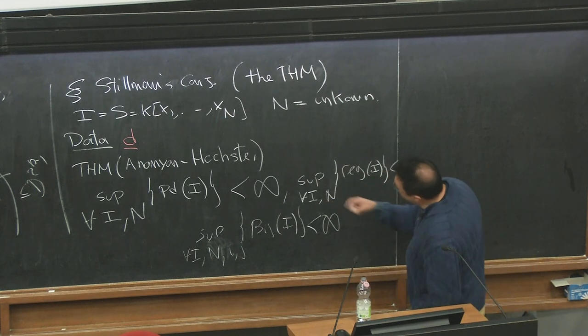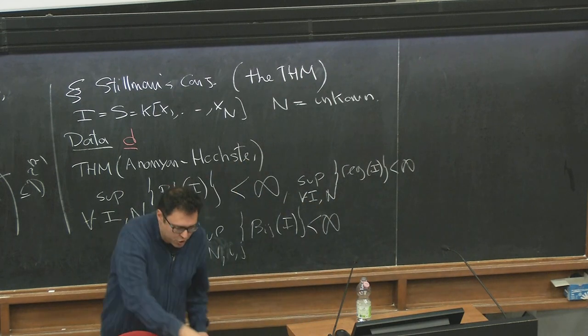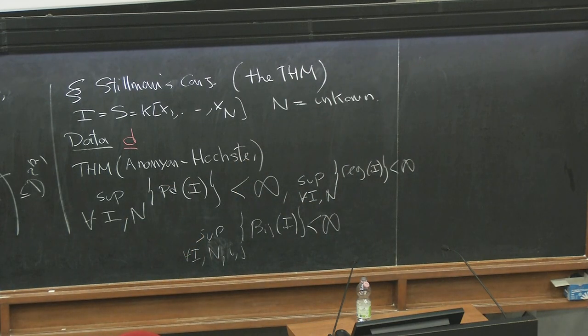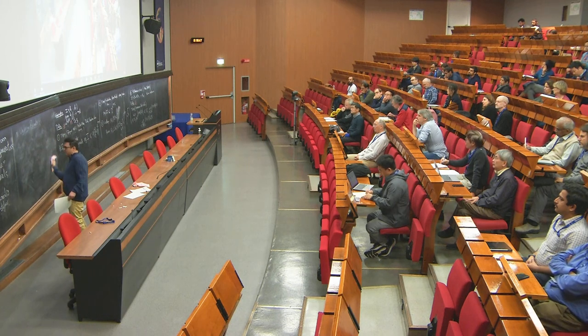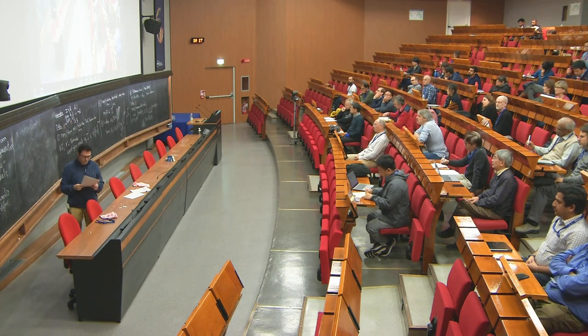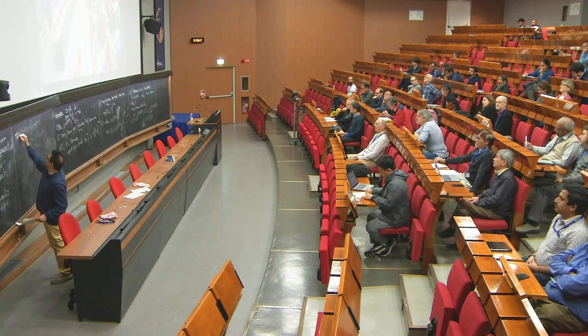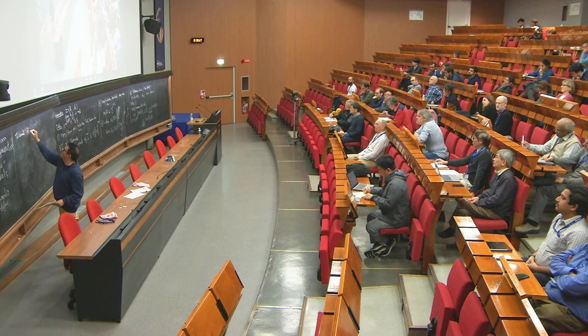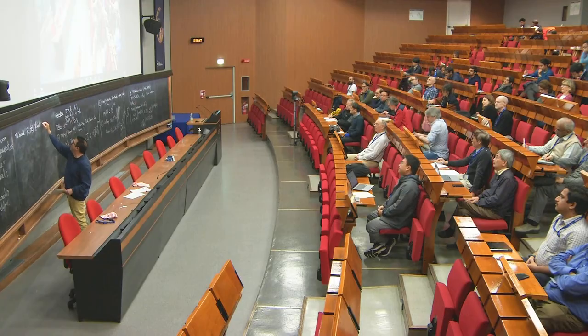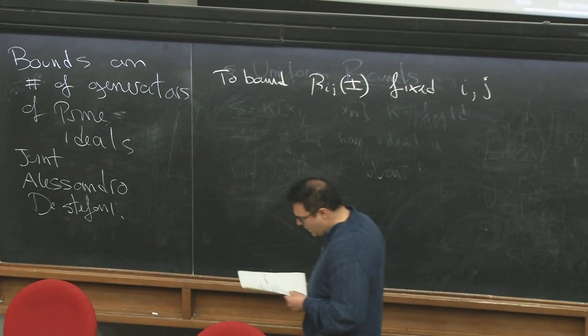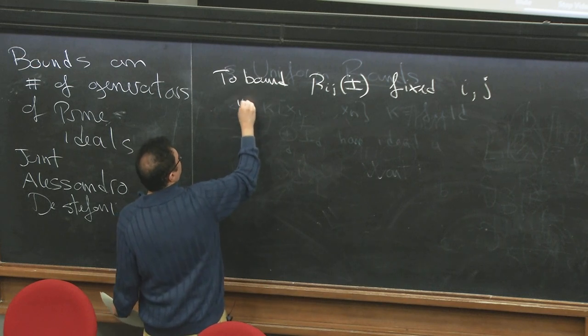But if we care for Betti numbers, let's say I'm going to change sides. If you care for a Betti number, especially for a single Betti number, not the class of all the possible Betti numbers in the resolution, then the task becomes easier. I want to give you an example of that. To bound a single B_IJ of I, in this case fixing the pair I and J, it's easier.